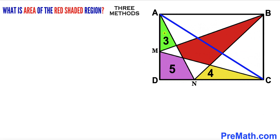The area of the green region is 3 square units, the area of the yellow region is 4 square units, and the area of the purple region is 5 square units. Furthermore, the blue line AC is the main diagonal of rectangle ABCD, and our task is to calculate the area of the red shaded region.